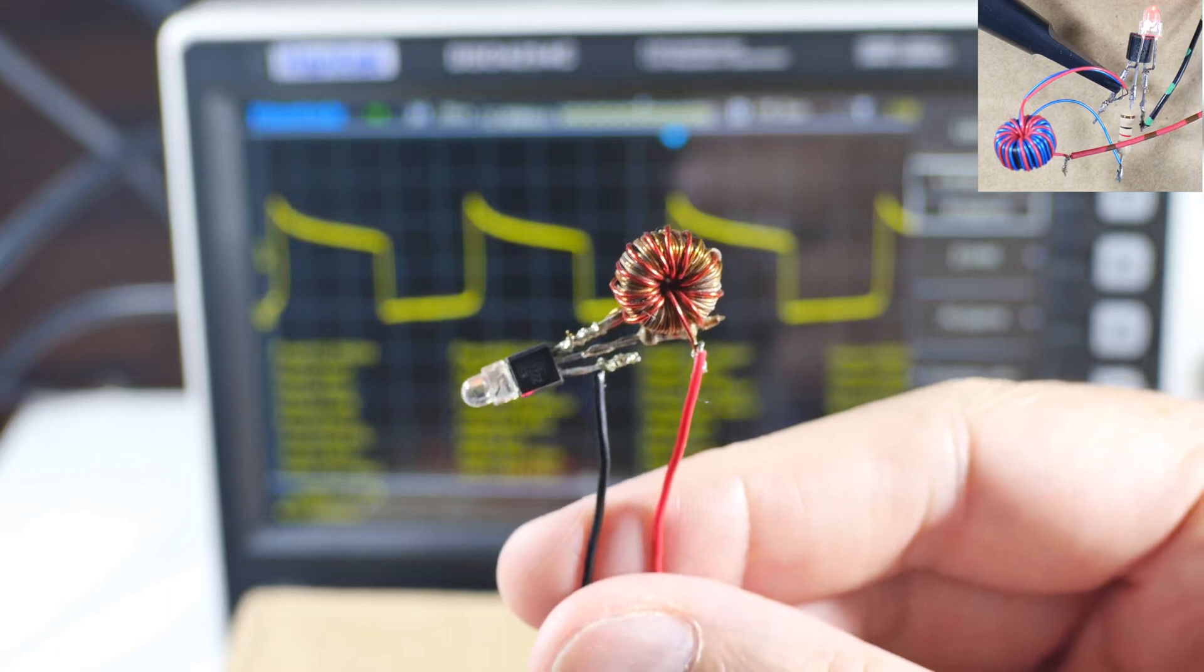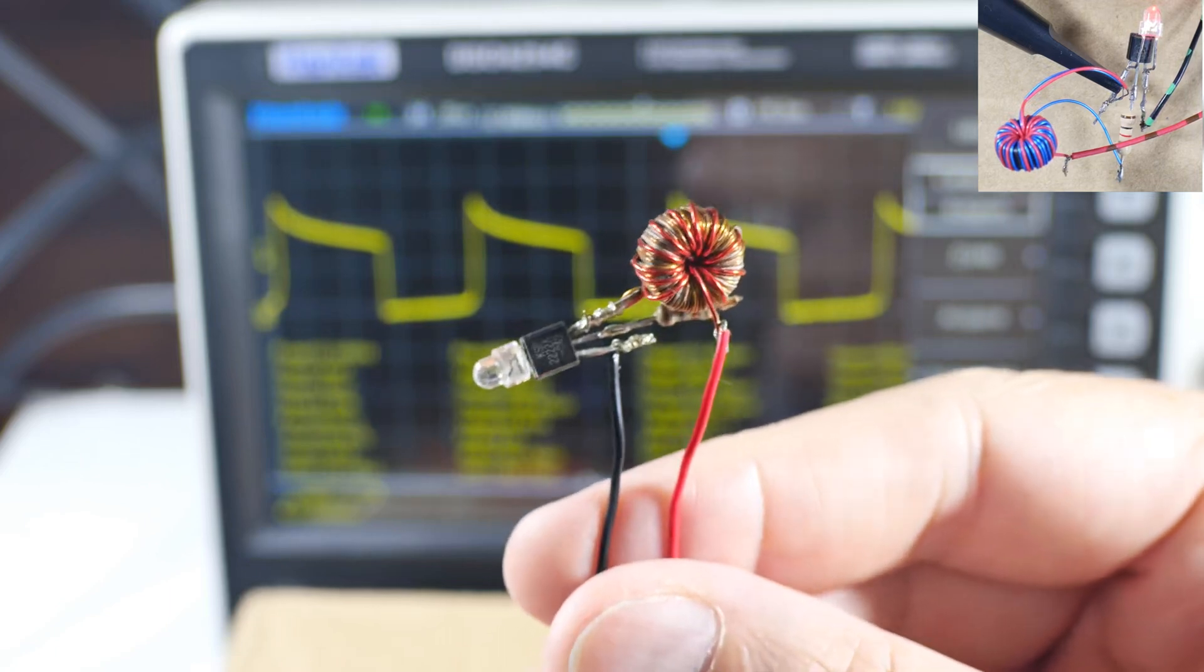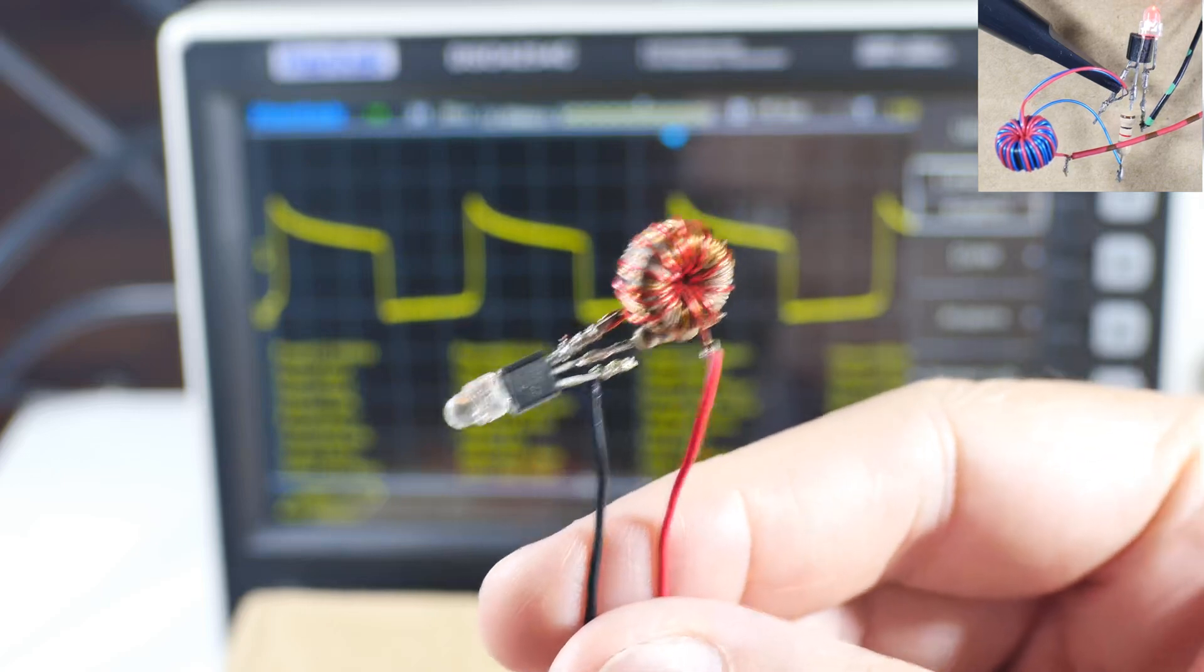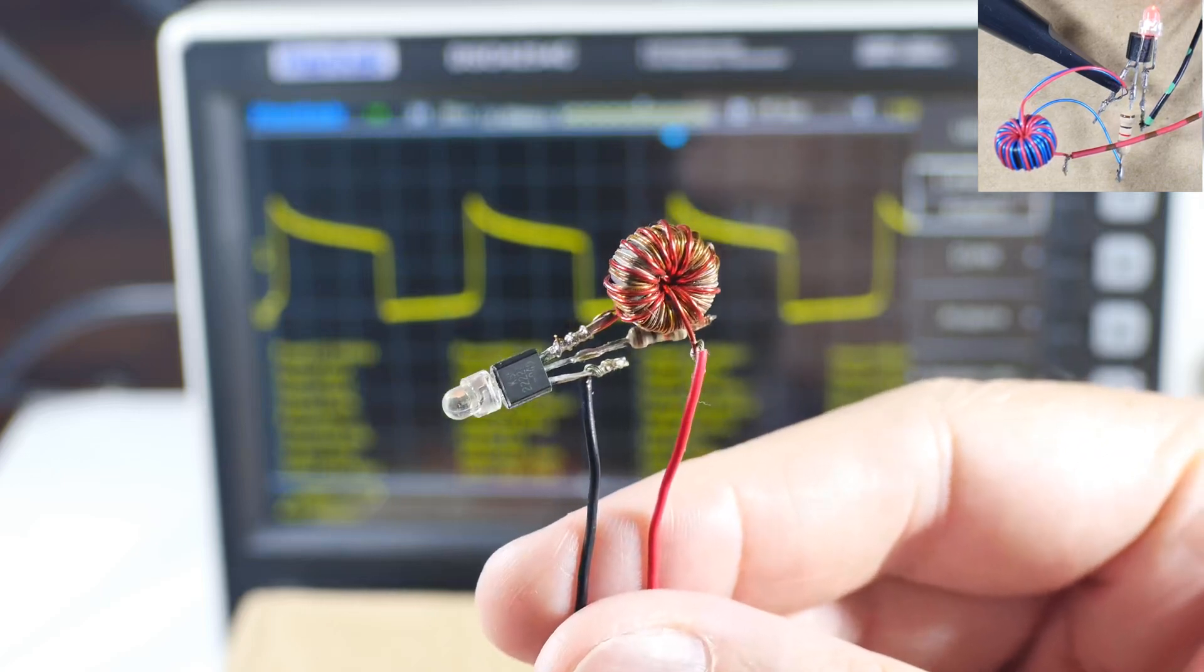So let's cut to the oscilloscope and take a look at two of these. I've got one I'll call the brown one and then I've got the blue one. Okay so let's go do that.